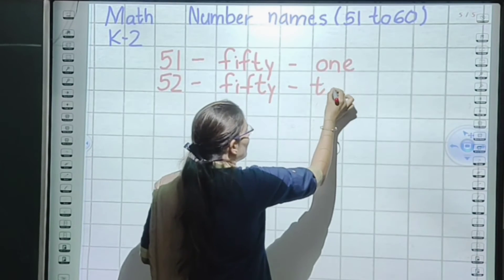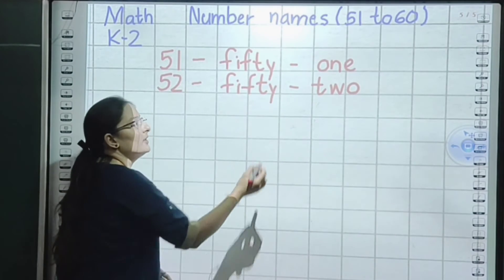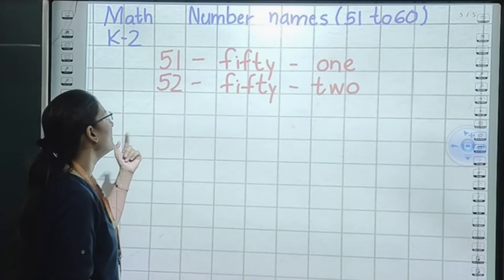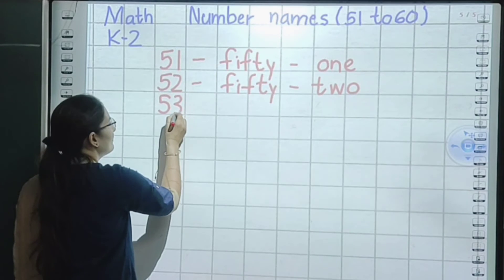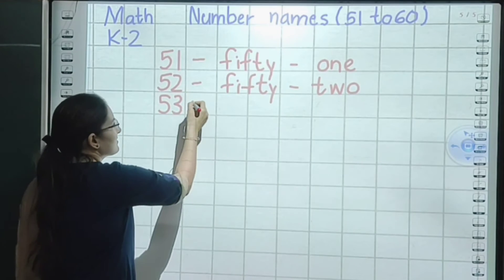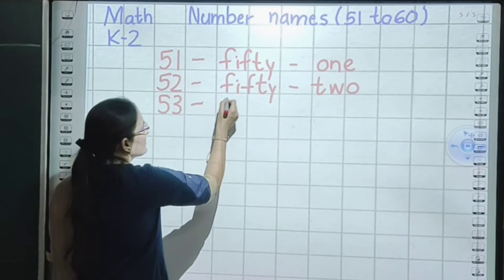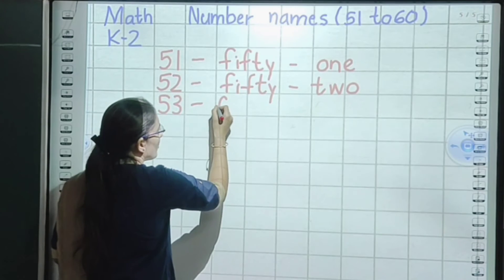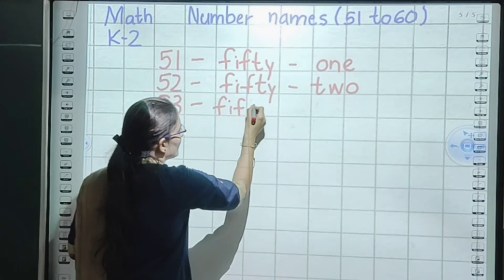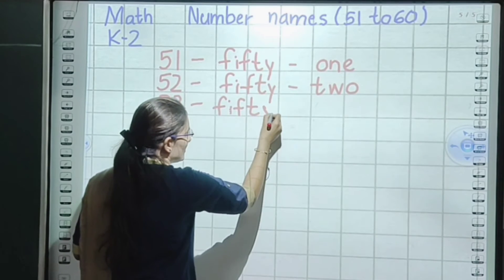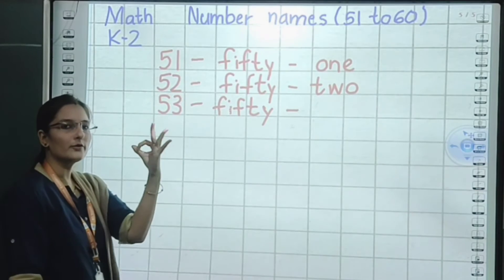Again we are going to write the spelling of 50. Now, which number will come here? 52. Small sleeping line. Spelling of 50: F, I, F, T, Y — fifty. Small sleeping line. Now the spelling of 2: T, W, O — two. So 52 is fifty-two.